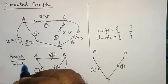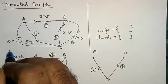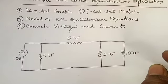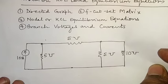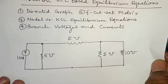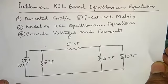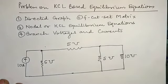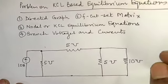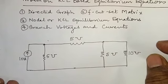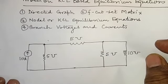On the basis of this directed graph, we have to draw the F-cut set matrix or determine the F-cut set matrix. To determine the F-cut set matrix, first of all from the given directed graph, we have to select one tree.